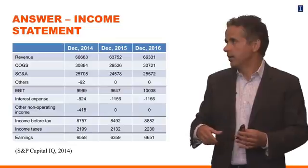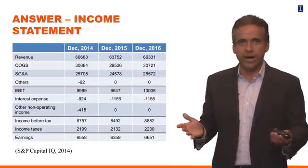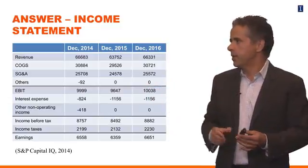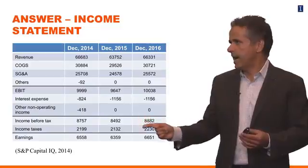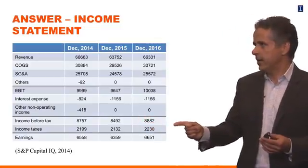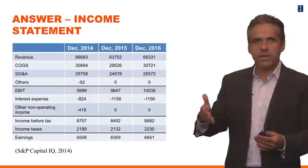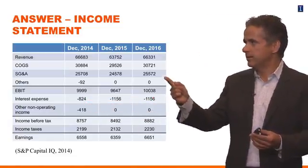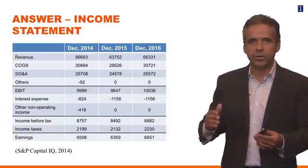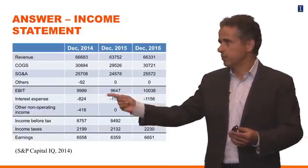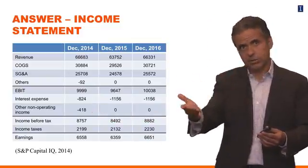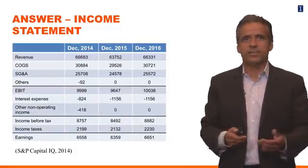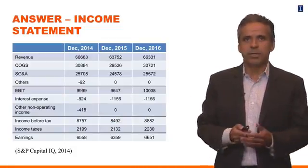So here are some of the numbers we wrote down. We can fill in every cell. Interest is here, taxes assuming a constant tax rate — and what that means is you can forecast all the items. The other non-operating income is set to zero, effectively assuming it's a one-time expense that is not going to happen again in the future. That is our forecast of PepsiCo's future income statement.